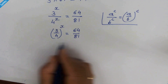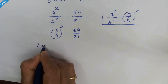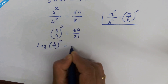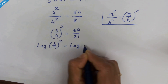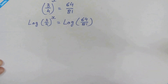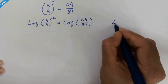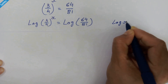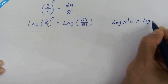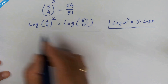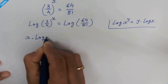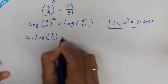Now let's remind this rule: if we have log of x raised to y, then it will be y times log of x. According to this rule, this part can be written as x times log of 3 upon 4 is equal to log of 64 upon 81.